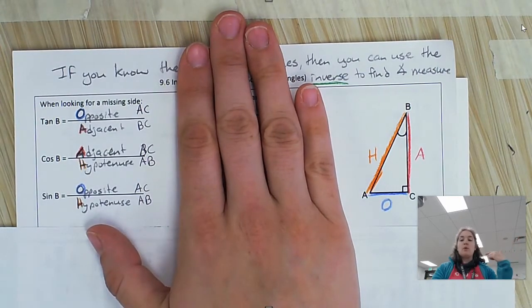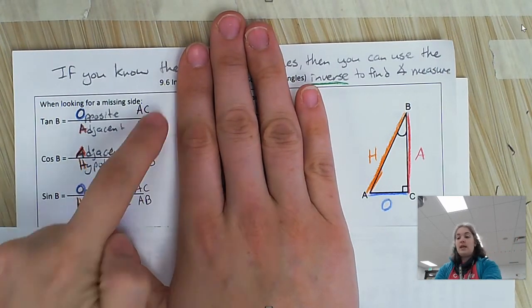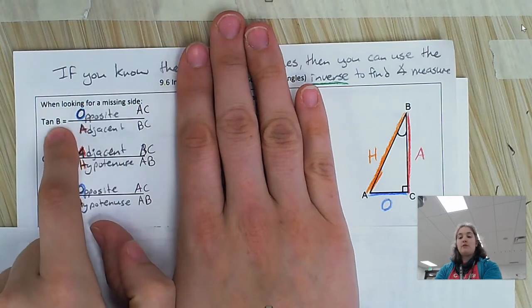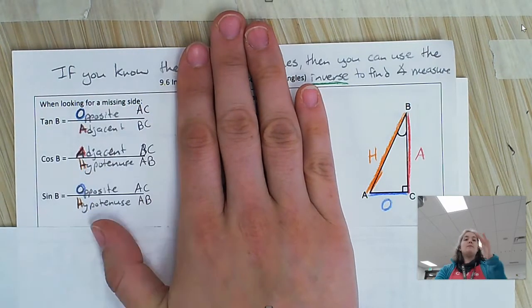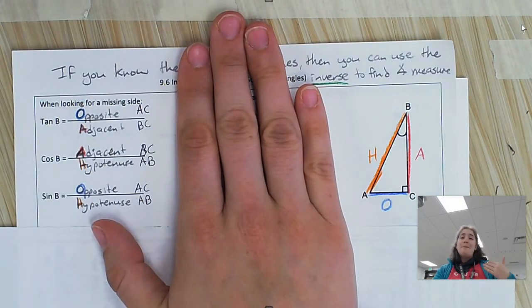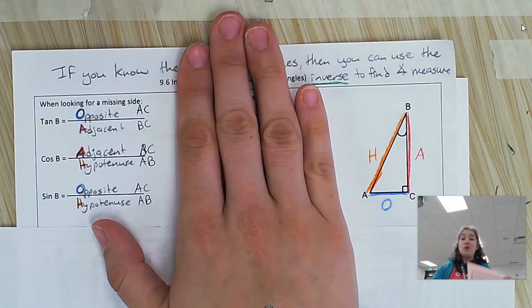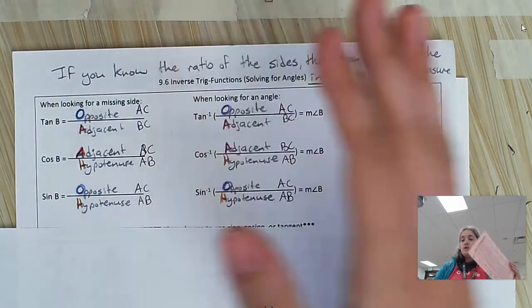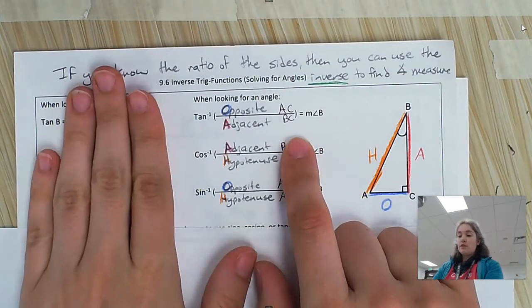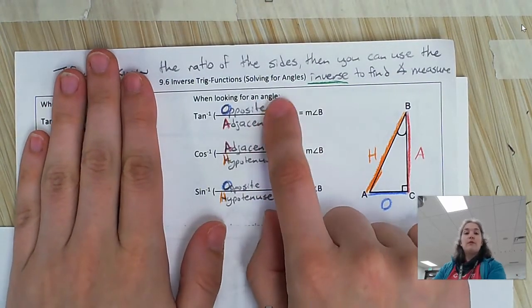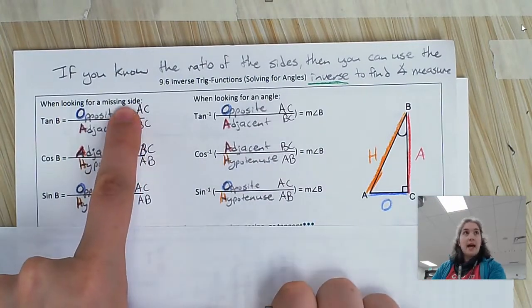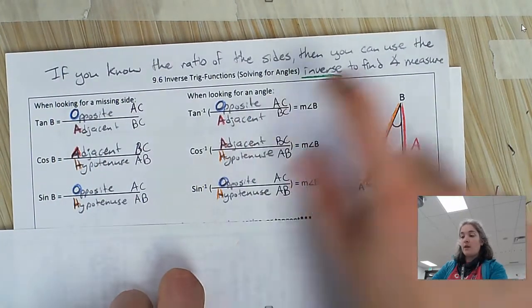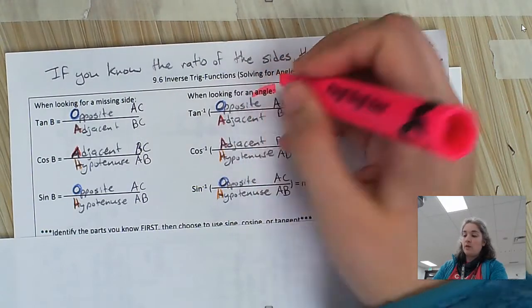We know this already. The inverse is where we flip. We take our ratio and we put it in for B and B goes out. So we basically solve for the angle. Basically what you're doing is you're looking it up on this table. So this is what the inverse looks like, and this is for when you're looking for an angle. This is a missing side. This is for an angle.